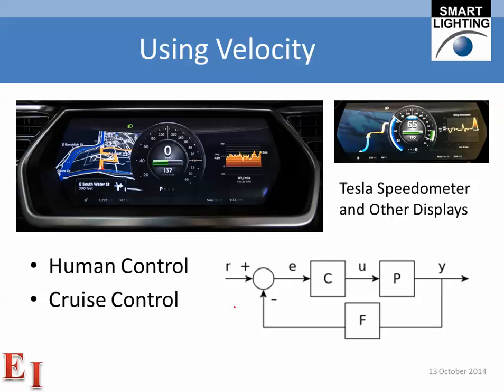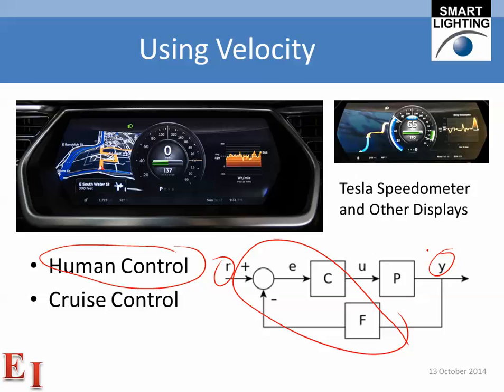Just to remind you about using velocity — the cantilever beam experiment is not quite the same as this application, but it's a fun one we're all used to: controlling the velocity of an automobile. Usually the human driver is doing the control, providing all the functionality. We have a speed we want to go, here's the speed we're actually going, and we push our foot on the accelerator or brake to reach the specified level. This can also be done automatically by cruise control. I've shown here the speedometer from a Tesla, which has an interesting control and display structure.